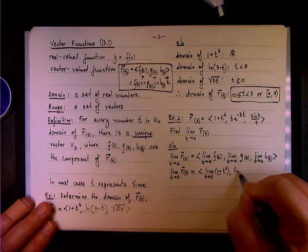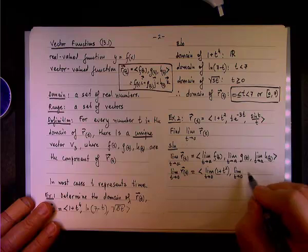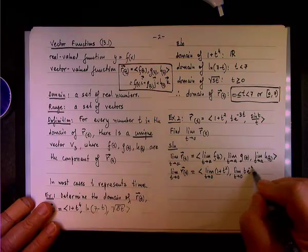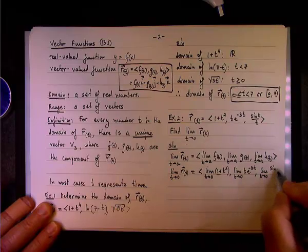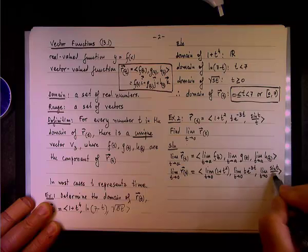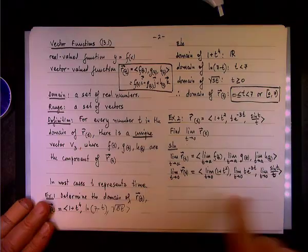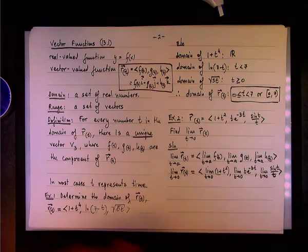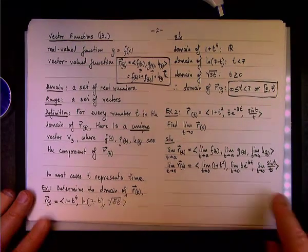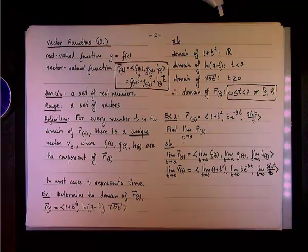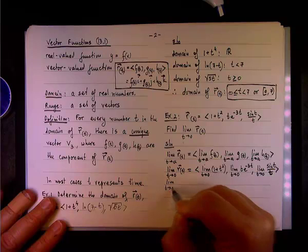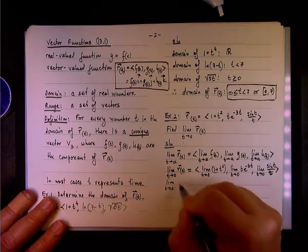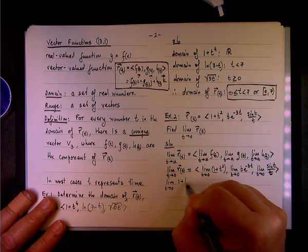Then it will be the limit as t approaches 0 of 1 plus t squared, then the limit as t approaches 0 of t e to the negative 3t. The limit is also a vector whose each component is a limit as well.